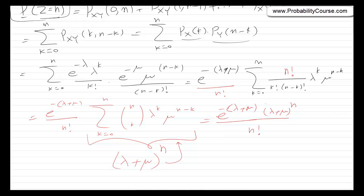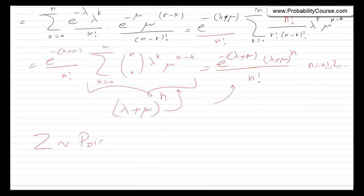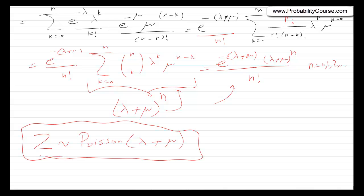This is true for n = 0, 1, 2, and so on, giving us P_Z(n). If you look at this carefully, you see that Z is a Poisson random variable with parameter λ + μ. That's an interesting property: if you have two independent Poisson random variables with parameters λ and μ and you add them, you get another Poisson random variable with parameter λ + μ.